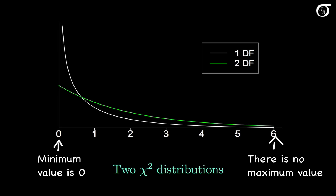For 1 and 2 degrees of freedom the PDF is greatest at 0. In fact for 1 degree of freedom — the white curve — we can't really plot it as the PDF shoots off to infinity at 0, so I've truncated it just before 0. The shape is a little bit different as the degrees of freedom get a little bigger, so let's have a look at that.